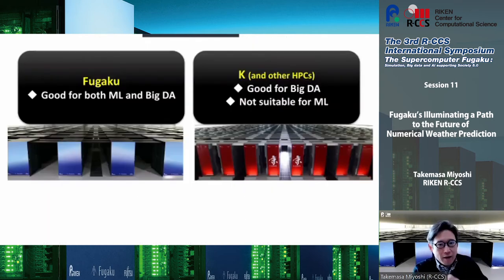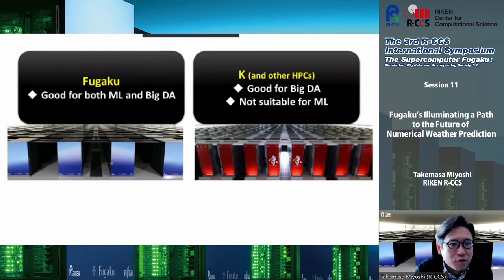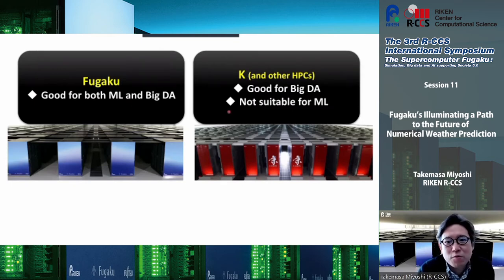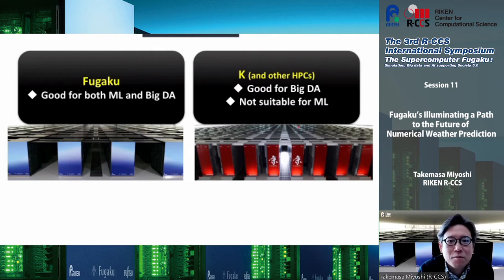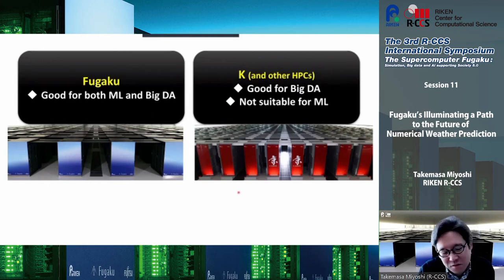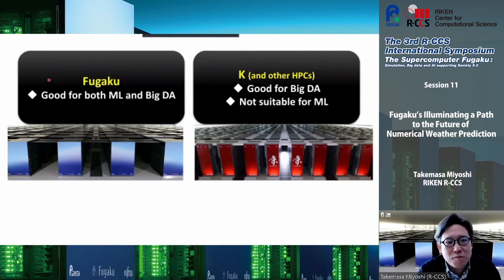Another aspect of Fugaku is that it is good for both machine learning and big simulations — the K computer was not really suitable for machine learning, and some HPCs that are good for simulations may not be good for machine learning. Without Fugaku, you produce a lot of data on a big supercomputer and then have to move it to a separate machine for machine learning, which is basically impossible for very large datasets. Fugaku allows us to run machine learning using data from big simulations in place.